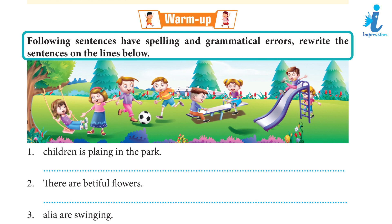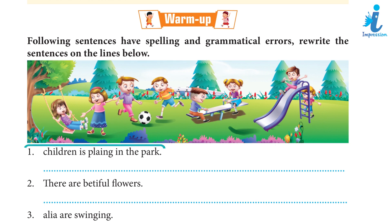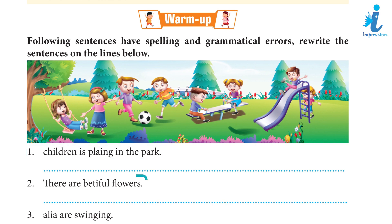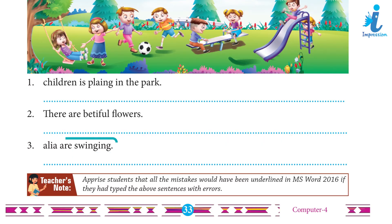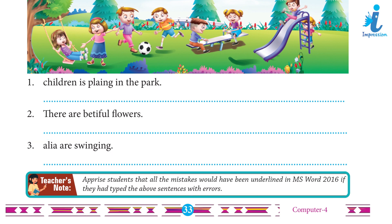Warm up: The following sentences have spelling and grammatical errors. Rewrite the sentences on the lines below. 1. Children is playing in the park. 2. There are beautiful flowers. 3. Alia are swinging. Teacher's note: Apprise students that all the mistakes would have been underlined in MS Word 2016 if they had typed the above sentences with errors.